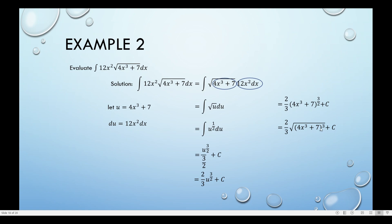I can break down the exponent into 2 and 1. So I have 2 thirds, and then 4x cubed plus 7 times the square root of 4x cubed plus 7, because the exponent of 3 halves splits into a whole part and a square root. Simplifying further — multiplying 2 and this binomial — gives 8x cubed plus 14, times the square root of 4x cubed plus 7, all over 3, plus c. That is example number 2.